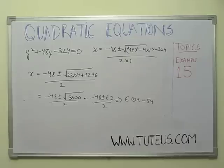Since the speed of the stream cannot be negative, minus 54 is rejected. Therefore y equals 6 km per hour is the speed of the stream. This is verified and is the correct answer. Thank you.